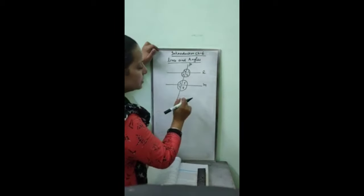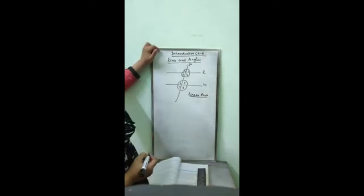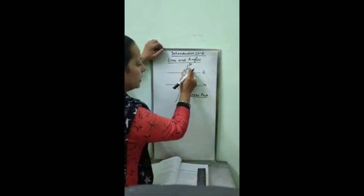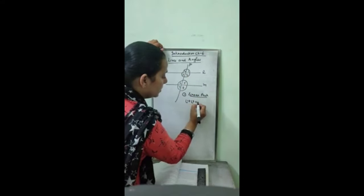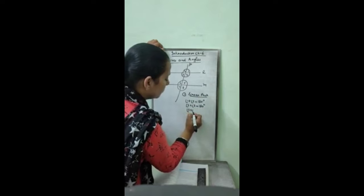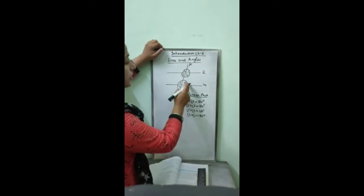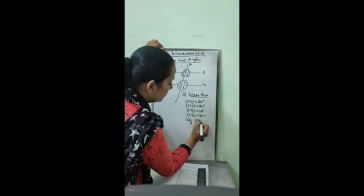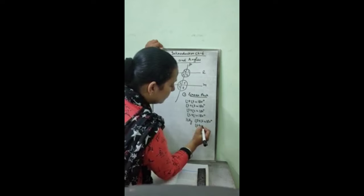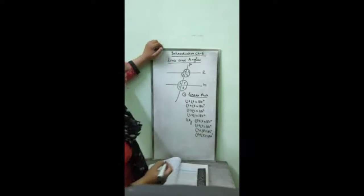Now I am going to discuss the relation between these angles. First relation is linear pair. Linear pair is the relation of straight line also. Linear pair: angle 1 and 2, 180. Linear pair is always 180. Then 2, 3, 180. Then 3, 4. Then 4, 1. Similarly here, 5, 6. Then 6, 7. Then 7, 8. Then 8, 5. This is one pair, linear pair.